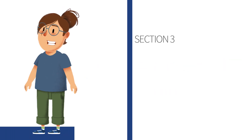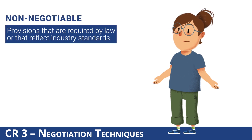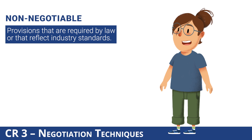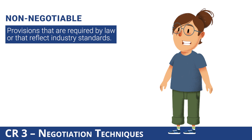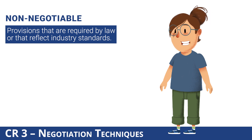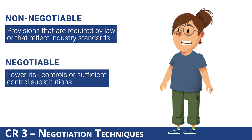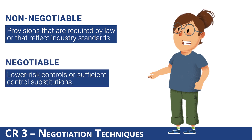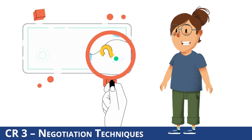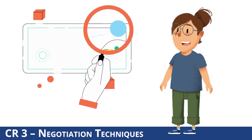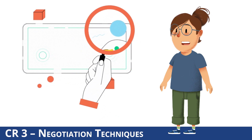In general, not all parts of a template agreement need to be negotiated with every third party. Some parts of the agreement may be non-negotiable, such as provisions required by law or that reflect industry standards, and these may be included in the template to ensure consistency and legal enforceability. Other parts may be negotiated, such as lower risk controls or sufficient control substitutions. It's important to review agreements carefully and identify which parts may be negotiated and which are non-negotiable, to streamline the process and avoid unnecessary delays or disputes.